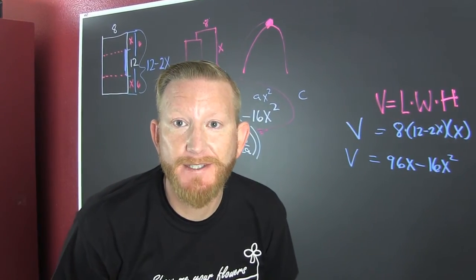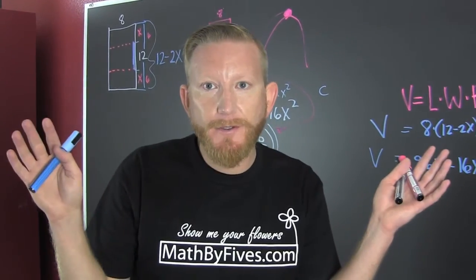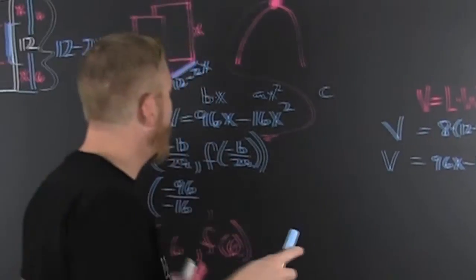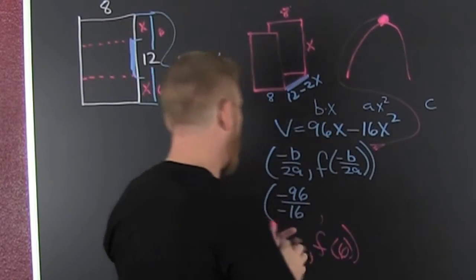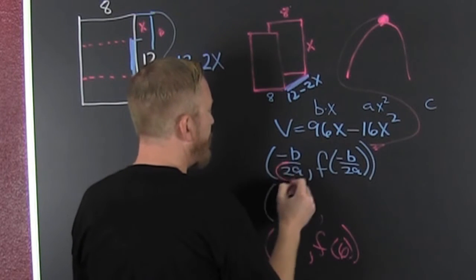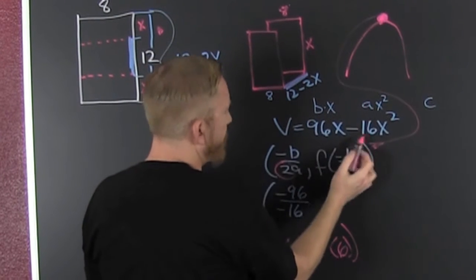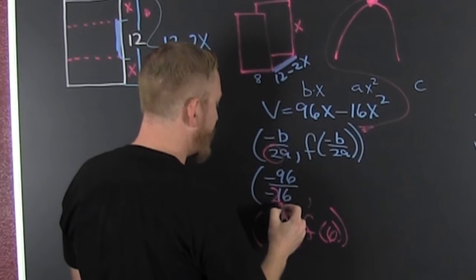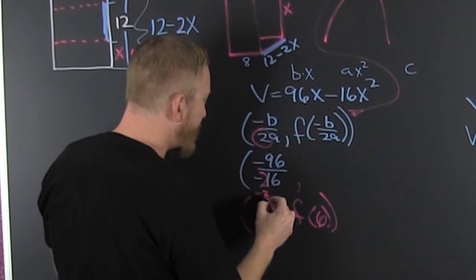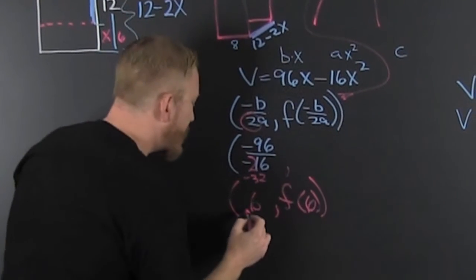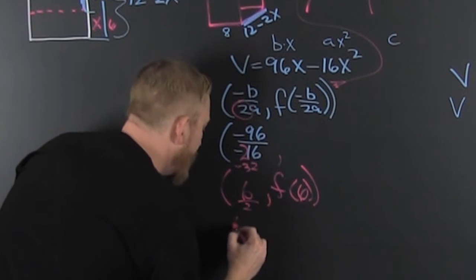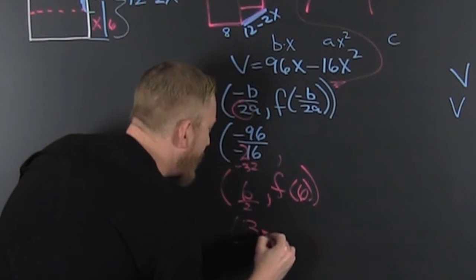Every once in a while I make a mistake just to show you where you could go wrong in a problem. Where was the goof? Right here. That was my A term, minus 16. So there should have been a two there. So that should have been a minus 32. So then my X should have been three.